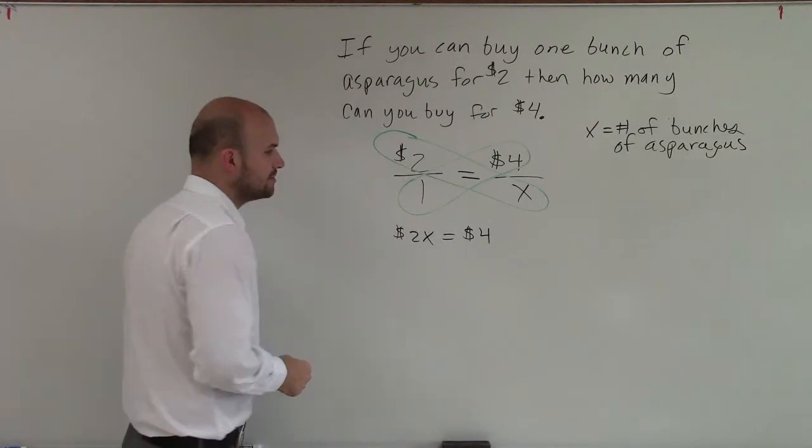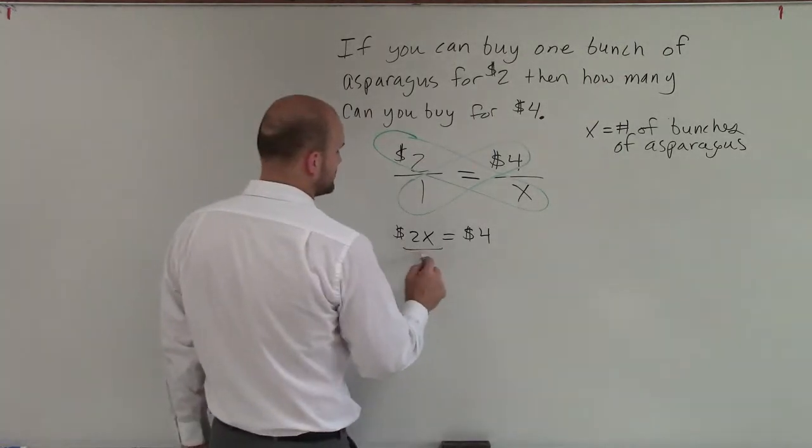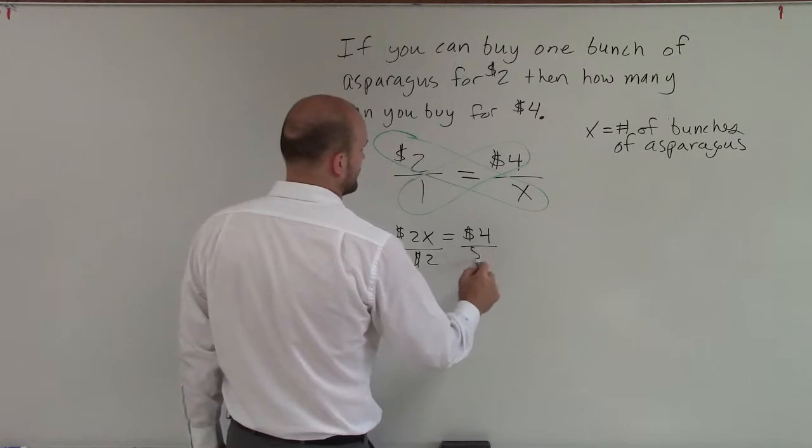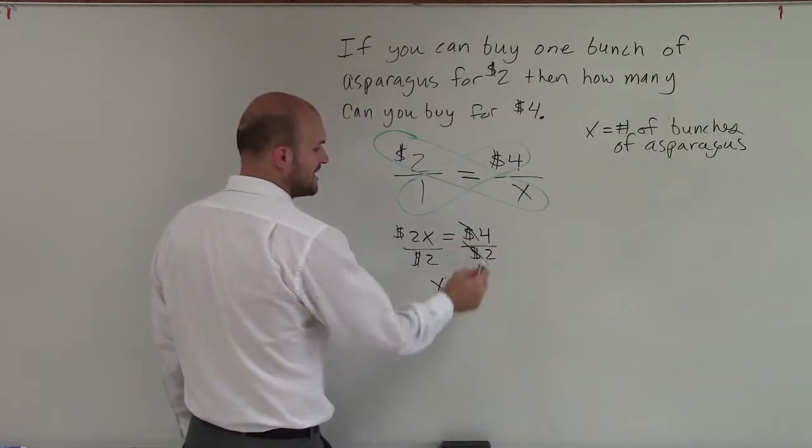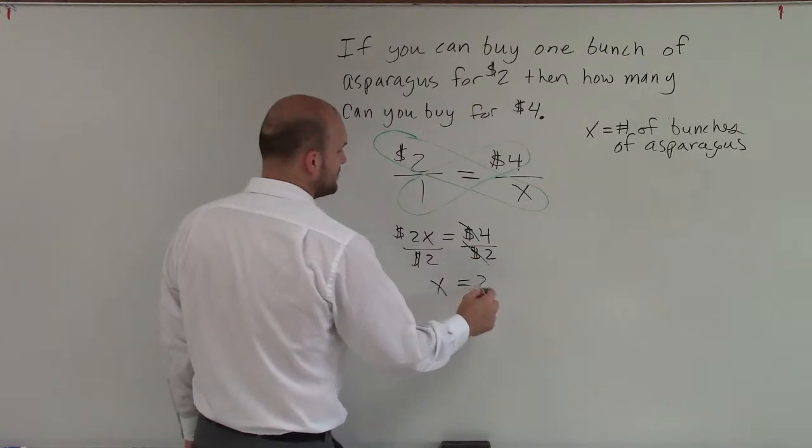I'm sorry, 2x equals 4, and then I'll divide by $2. And therefore, I get x equals... and 4 divided by 2 equals 2.